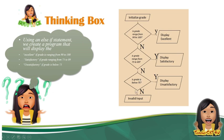Pag no yan, ibig sabihin magiging invalid input. Ano ba yung mga sample na pwede maging invalid input? For example, nag-input tayo ng 200. Yung 200 ba, nasa range ito? Wala din. Nasa range ito? Wala din. Nasa range ito? Ibig sabihin, invalid input yun. Basta lahat ng condition dito — 1, 2, 3 — pag nag-false yung tatlong yan, ang magiging sagot ay invalid input.